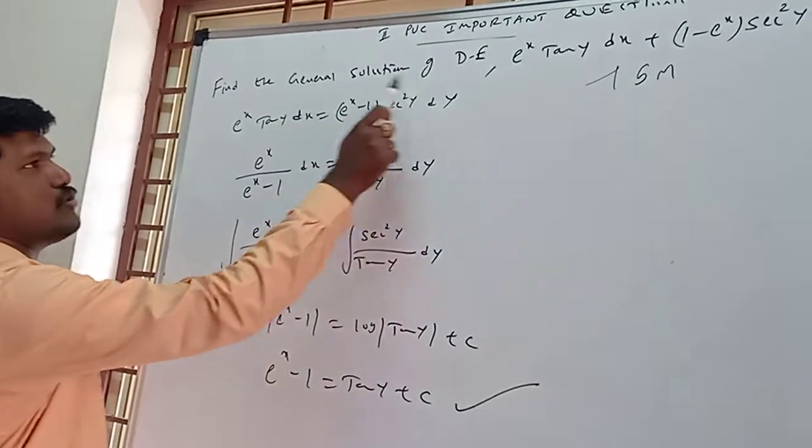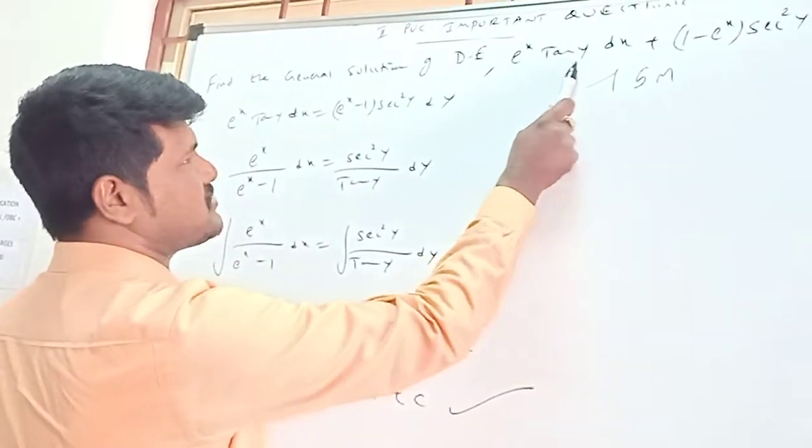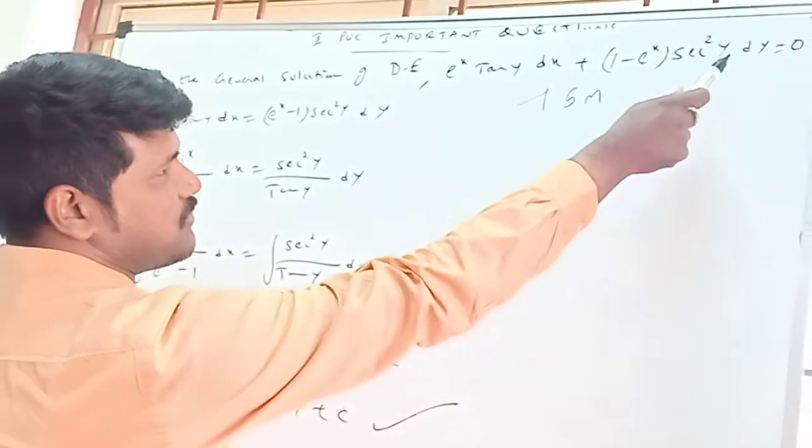See this question. Find the general solution of differential equation: e^x tan y dx plus (1 minus e^x) sec^2 y dy equal to 0.